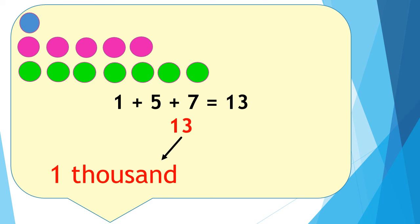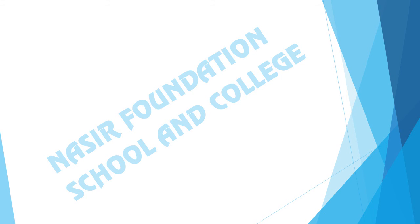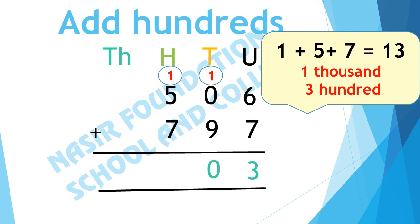In 13 hundreds there is 1,300. If we add 1, 5 and 700 we get 1,300. In 1,300 there is 1,300. We will write 3 in hundreds column and we will carry forward 1 to the thousands.